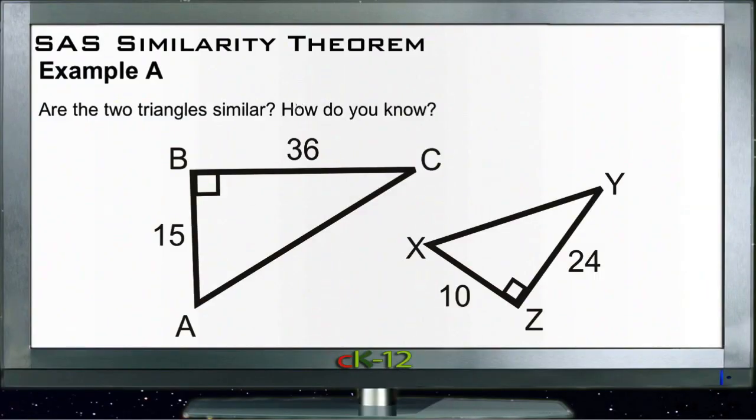All right, we're working on the example problems for SAS similarity theorem. Remember that SAS is side-angle-side, and this SAS similarity theorem tells us that if we have two triangles and we know that of the two triangles...